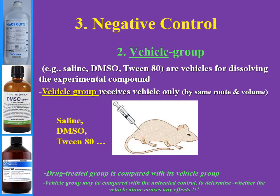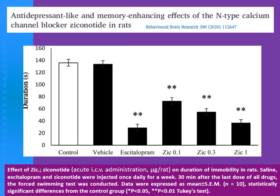In most studies, we use the vehicle group and the treated group. Look here — the escitalopram used in this study as a positive control — and there is also a vehicle group in which we inject rats with saline, which is the vehicle of the drug, so as to compare the drug with this negative control group.